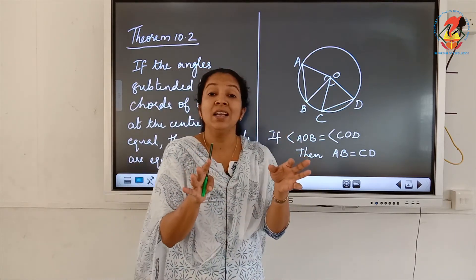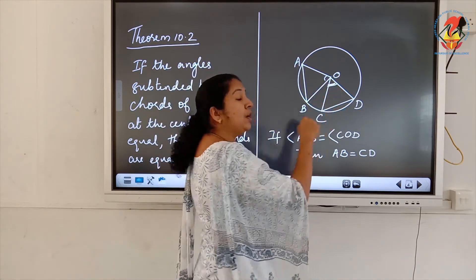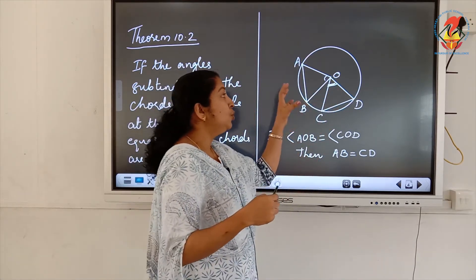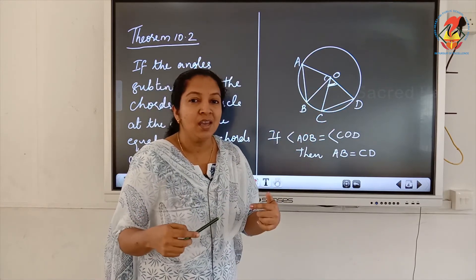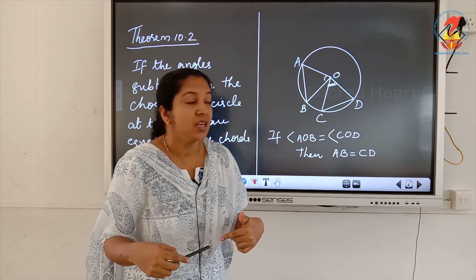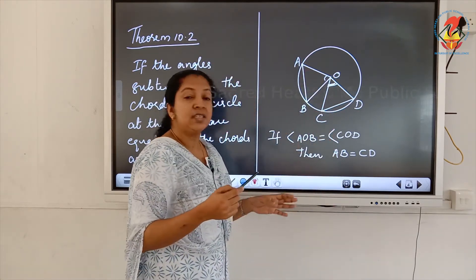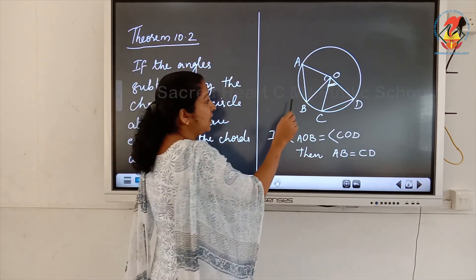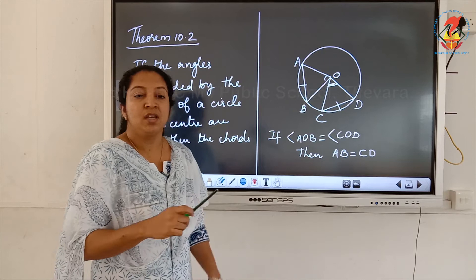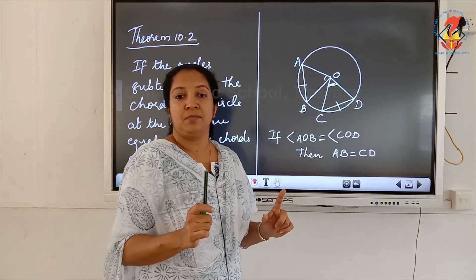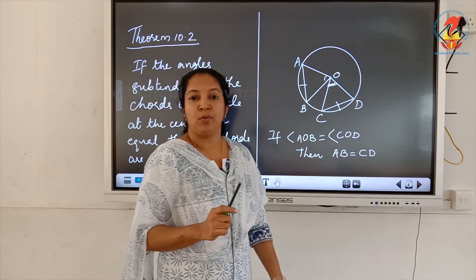What is given: angle AOB equals angle COD. What we have to prove: AB equals CD. You must know both theorems by heart because they are used as results when solving problems.